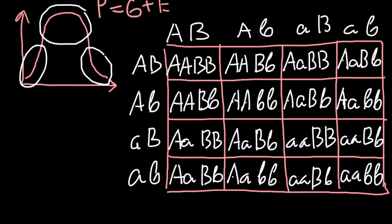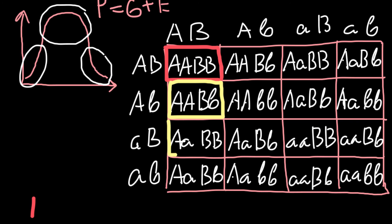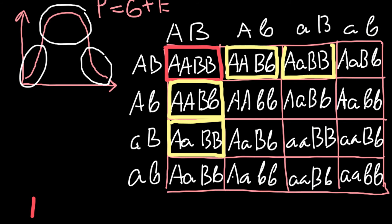Looking at our completed table, this genotype — with all four alleles dominant — appears only once. So this is our '1' in the ratio. That plant would be 80 centimeters tall: the 40 cm baseline plus four dominant alleles each adding 10 centimeters.